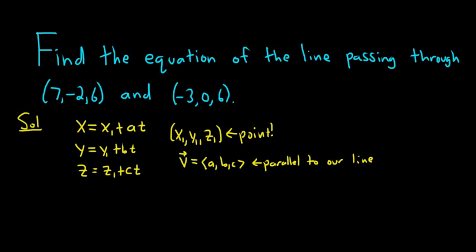All right, so how do we find a parallel vector? Well, these two points are on our line. So we can use them to create a vector. Say this is the last one and this is the first one. So this is the terminal minus initial. We just subtract them.